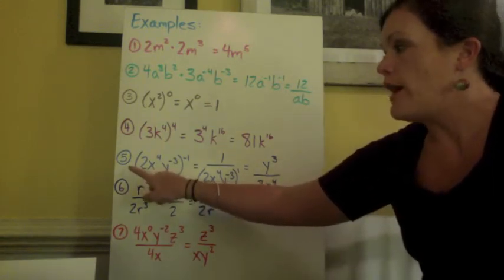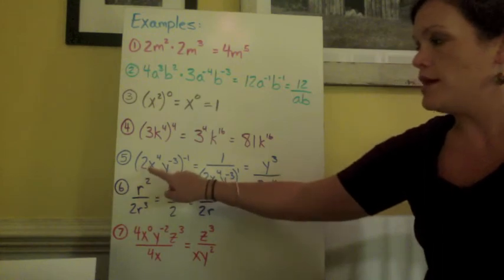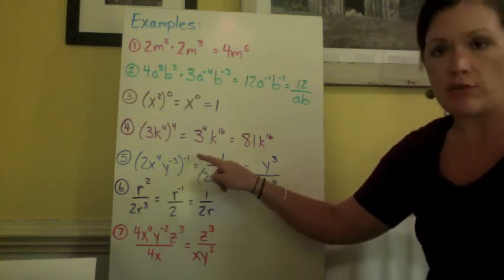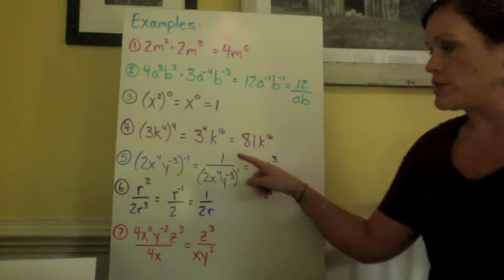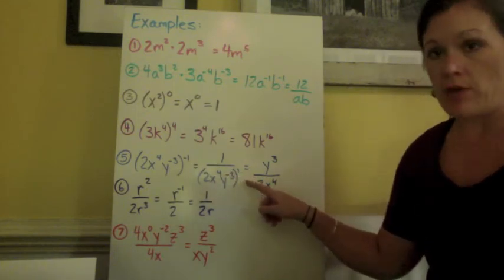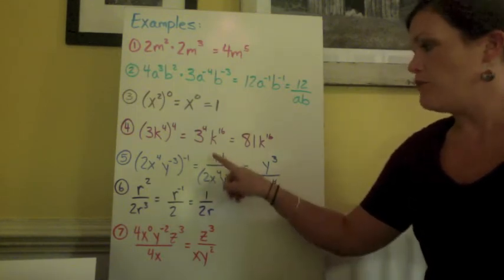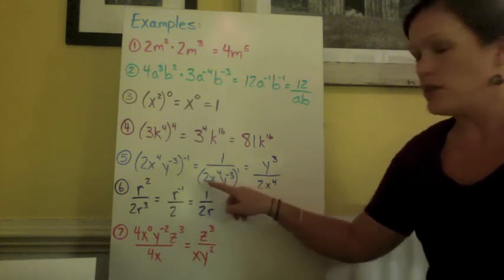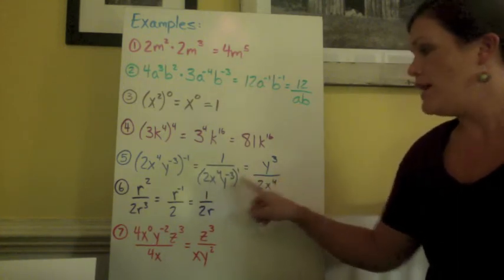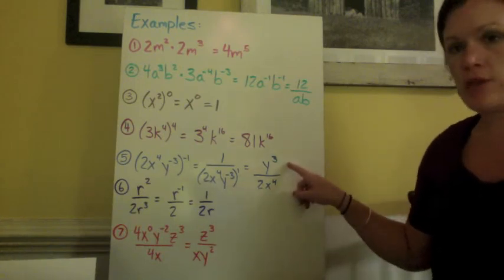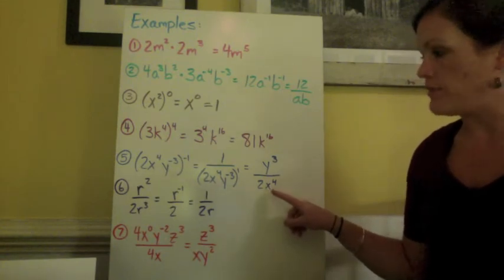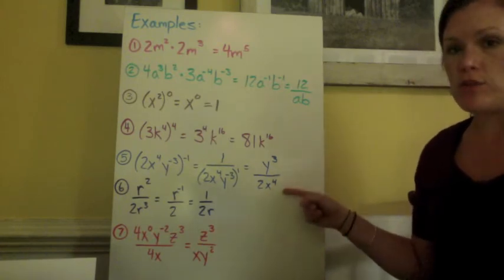Our next example, number 5, has a big product. 2x to the 4th y to the negative 3rd power all to the negative 1 power. We need to fix this negative 1 power first. So we rewrite our fraction and put everything on the bottom since all of our product was to the negative power. It will make it positive now. So I have 1 over 2x to the 4th y to the negative 3. Now I need to rewrite it so that the y will be positive 3. So I'll put it in the numerator and just bring over the 2x to the 4th. So my final answer is y cubed over 2x to the 4th.